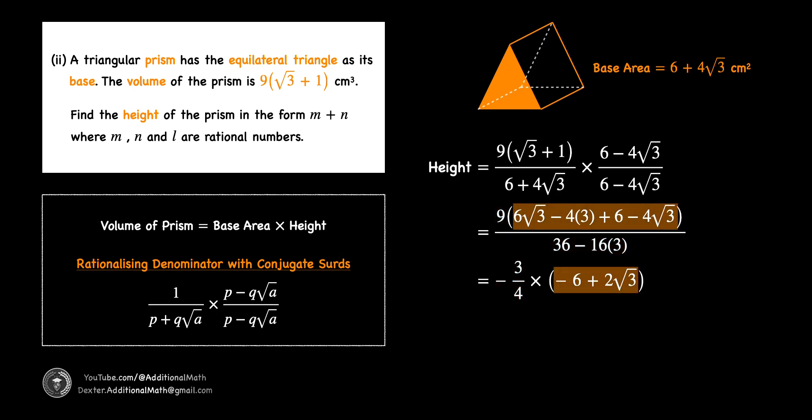During the final expansion, we multiply -3/4 by -6 to give 9/2, and the product of -3/4 and 2√3 gives -3/2√3. Thus, the height of the prism is found to be 9/2 - 3/2√3 cm. And that's the answer to this question.